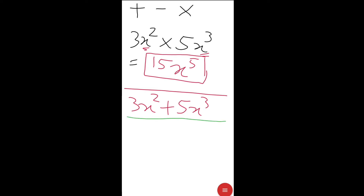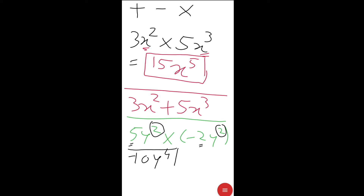Let us see one more example: 5y² multiplied by −2y². First, multiply the coefficients — 5 and −2, so 5 × 2 = 10, and plus × minus = minus, giving −10. The variable y is common between both terms, so we add the indices: y² × y² gives y^(2+2) = y⁴. The final answer is −10y⁴.